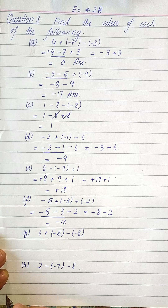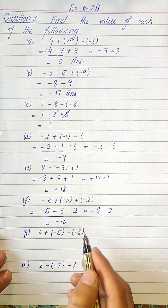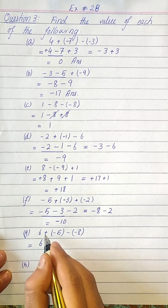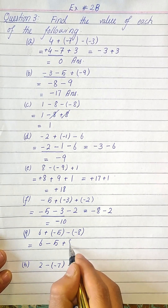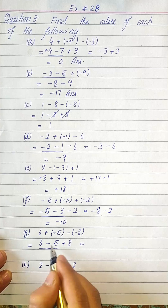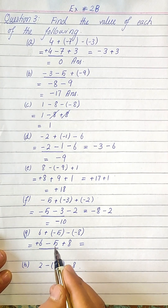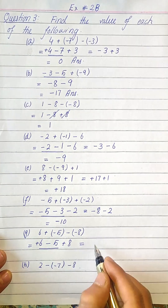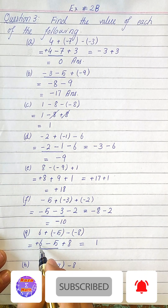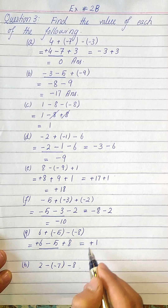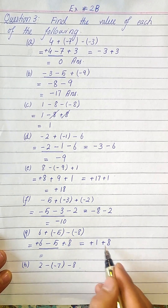In part g, we have six, plus times minus five, minus times minus eight. Plus times minus gives minus five, and minus times minus gives plus eight, so we have six, minus five, plus eight. Six and five have different signs, so six minus five is one, and we write the sign of the greater value — six is positive — so plus one. Then plus one and plus eight have the same sign, so one plus eight is nine, answer is positive nine.